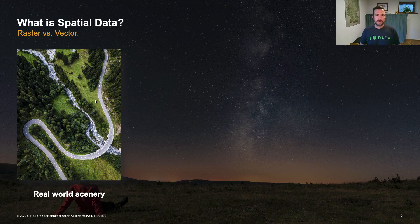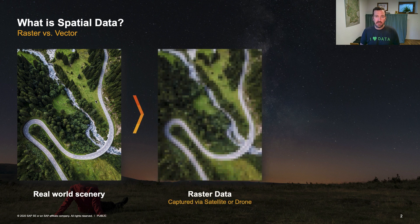Let's start with a short description of what geospatial data is. If you see here on the left side that real-world scenery with a nice road and river in the forest, we can capture an image of that using satellite or drones. The output — the image — is called raster data. What we have is a rasterized image where we have pixels with different colors or different values per pixel.